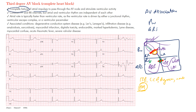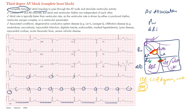Looking at the EKG, the P waves will go at their own rate. You have to look at multiple leads — even in lead two you may see them, but the best lead is V1. In V1 you can clearly make out the P waves marching along at their own rate. Notice one is buried in the QRS complex — they're all going at the same consistent rate.